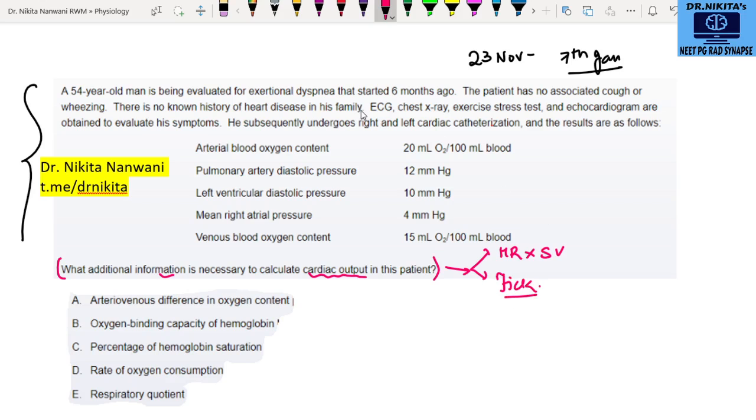Now in this question, we can gauge from the last line itself that this all has been given and the question is asking about what else is required to calculate the cardiac output. So even without reading the entire history which is there, I can save my time and solve this question fast.